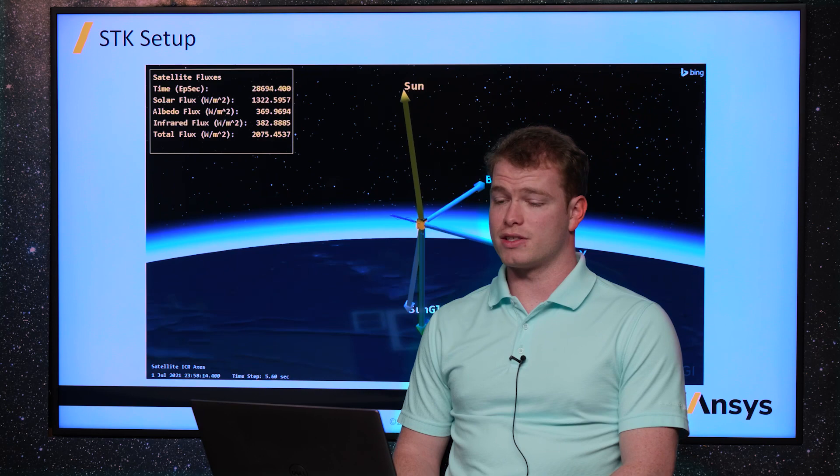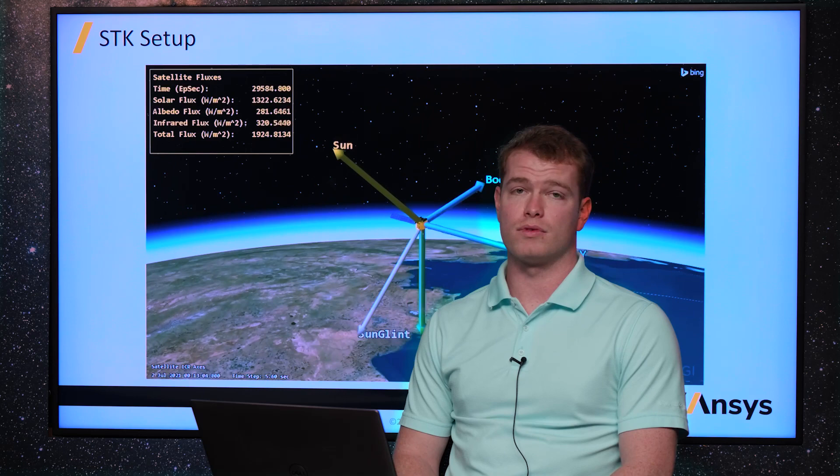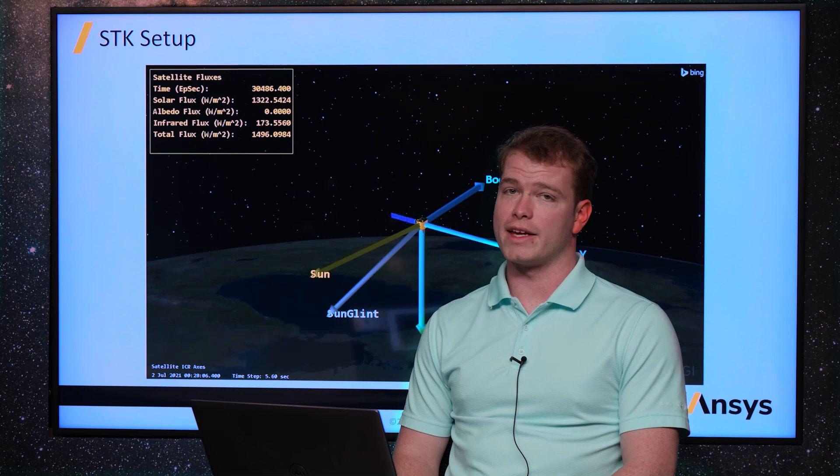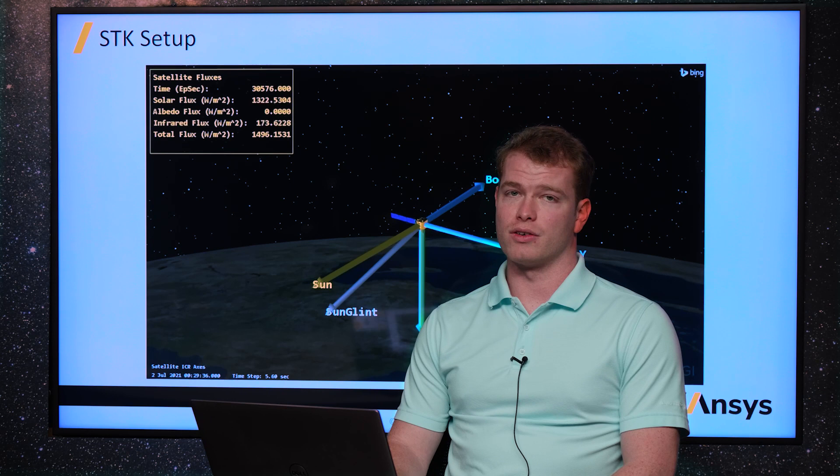So here's a short video of this setup in STK. We can see as the satellite orbits the various directions of these fluxes change. You can even see if we incorporate custom satellite attitudes such as pointing at a target that that will be reflected in the direction angles of these sources.